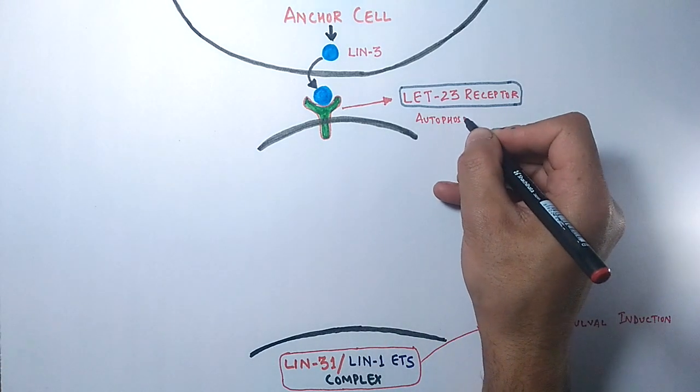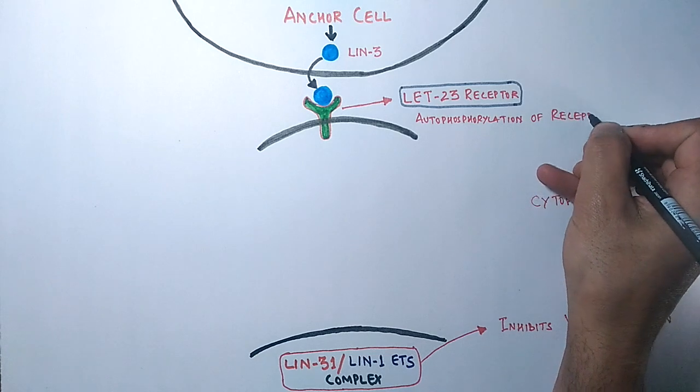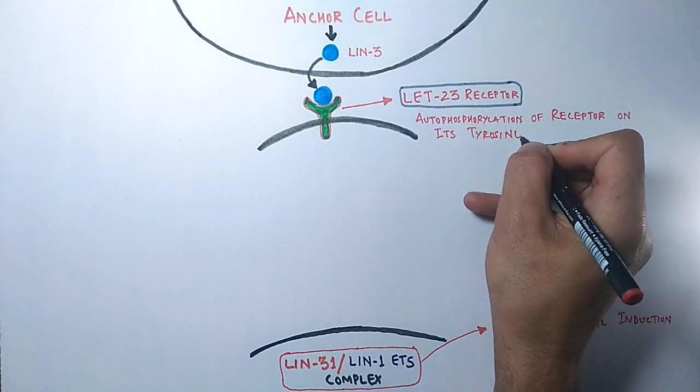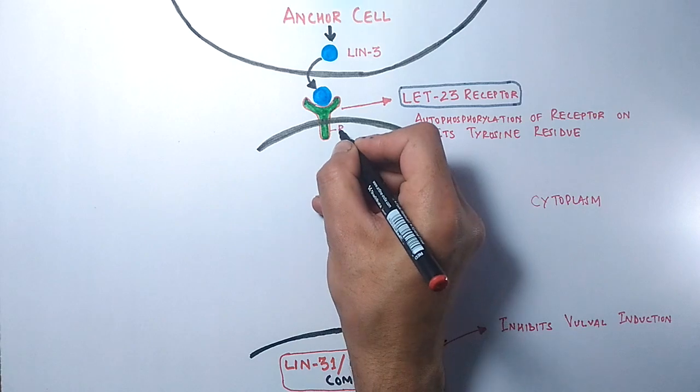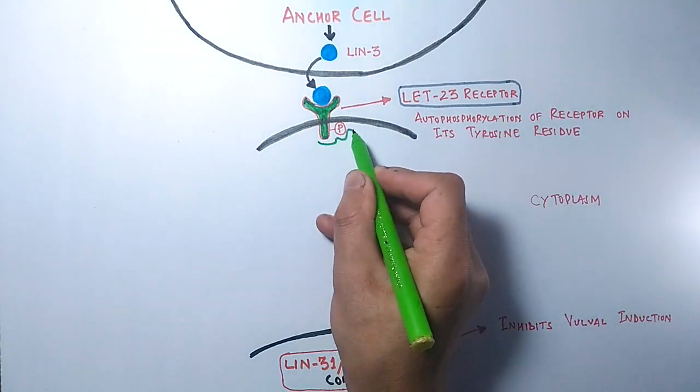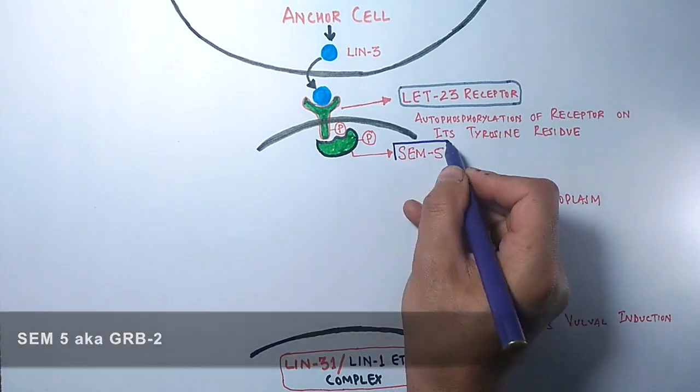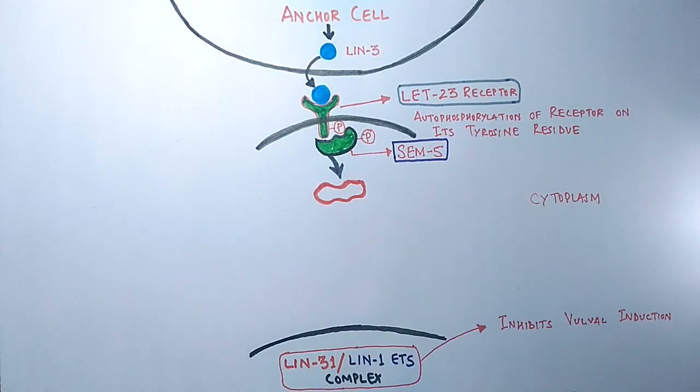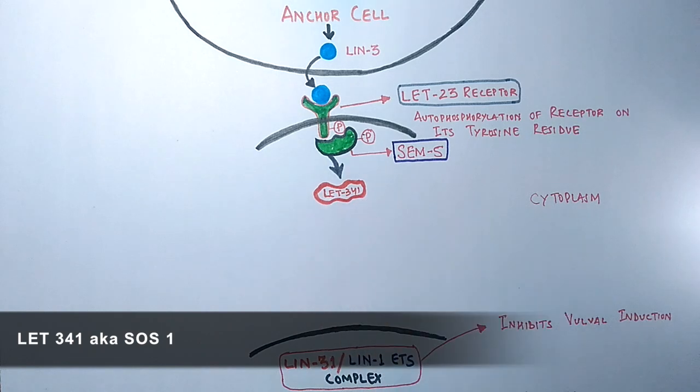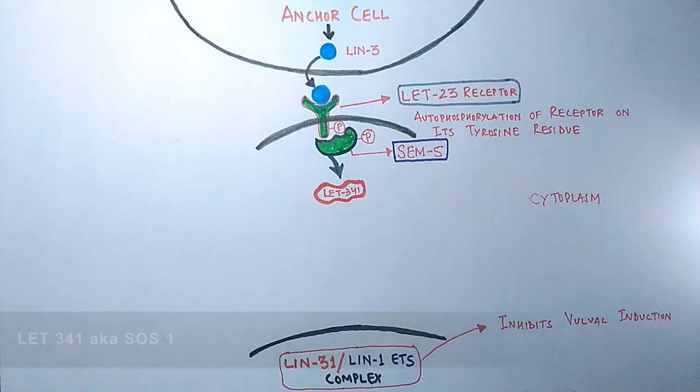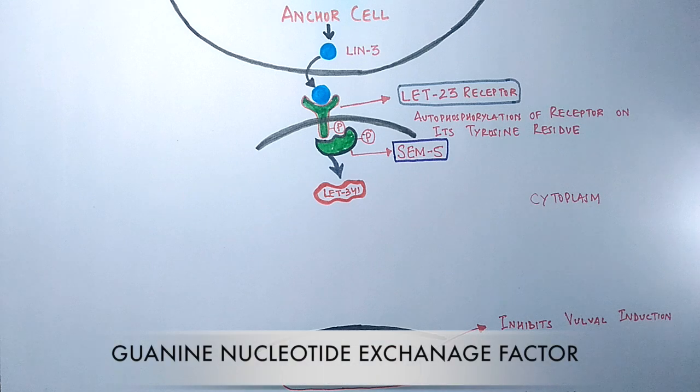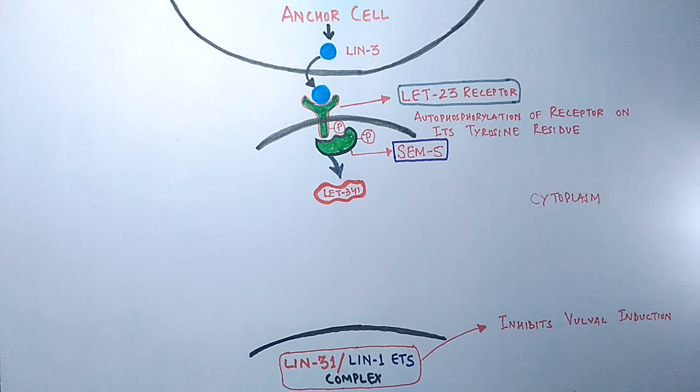The binding of lin-3 protein with let-23 receptor causes autophosphorylation of let-23 on its tyrosine residue, which further causes phosphorylation of the SEM-5 molecule. This phosphorylation of SEM-5 recruits and activates another downstream molecule called let-341. This let-341 molecule has capability to act as a guanine nucleotide exchange factor, which means it will allow binding of GTP and release of GDP on the target molecule.